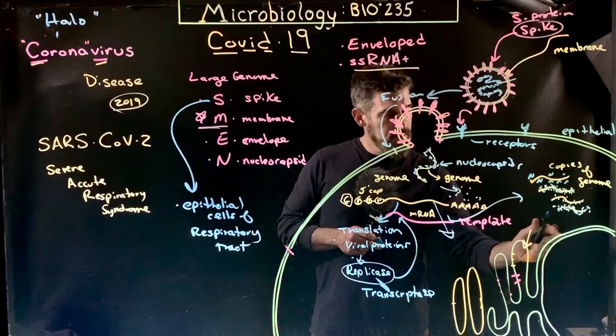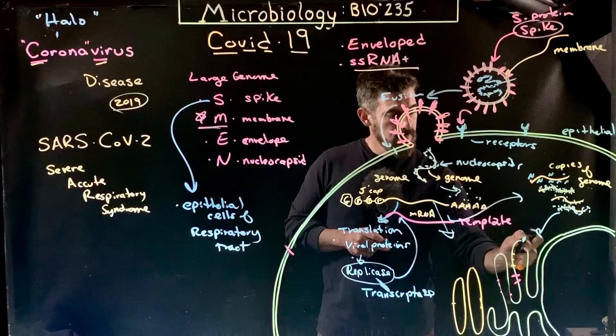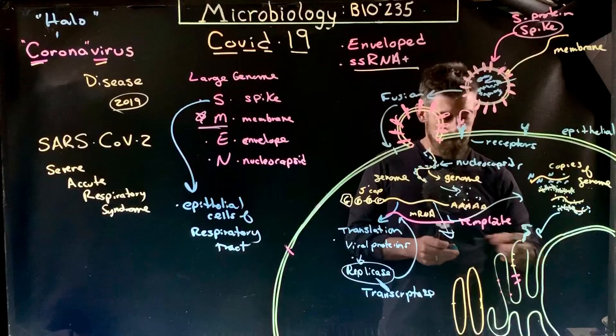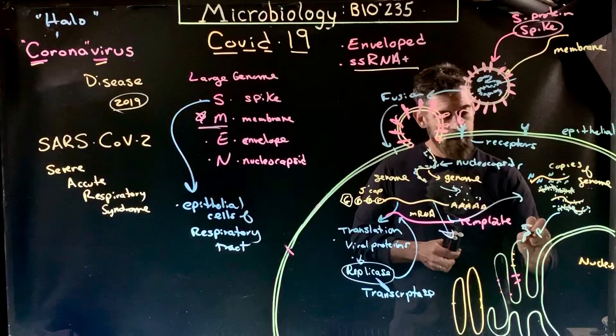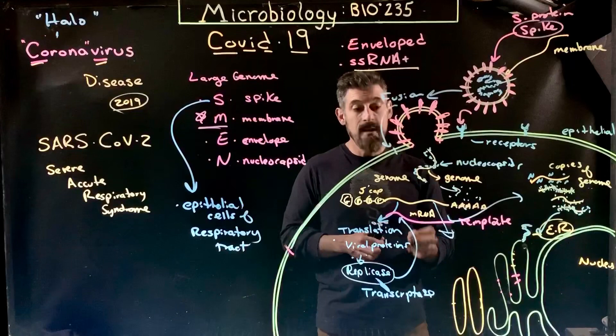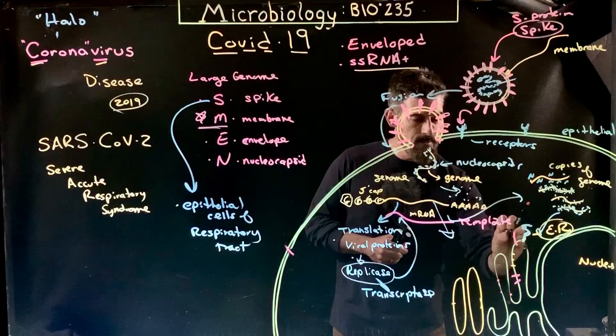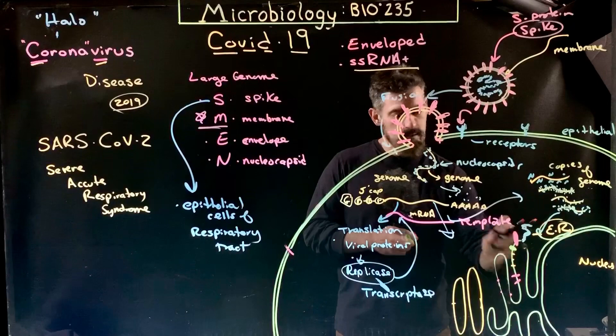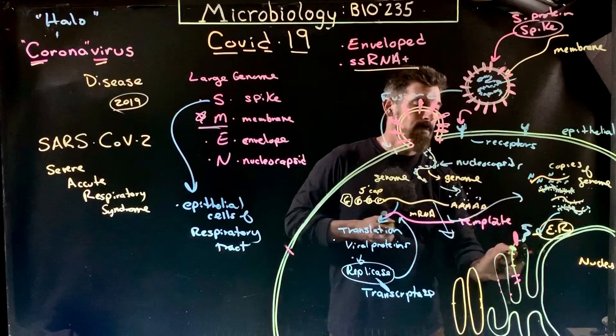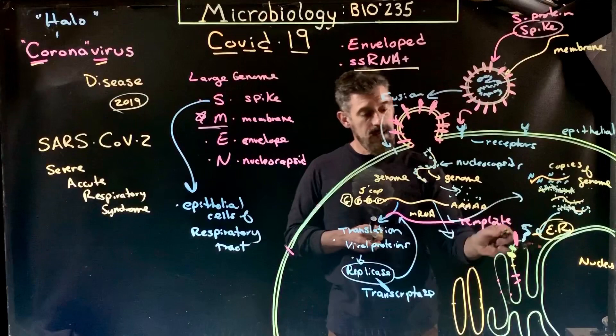It's a very coordinated specific process that makes a very unique structure. What they're going to do is come down and bind to the endoplasmic reticulum. This is the nucleus, and this is the ER — the endoplasmic reticulum. The other proteins are going to bind to the endoplasmic reticulum as well — the spike protein, membrane proteins, and the envelope protein — all binding here to the endoplasmic reticulum.